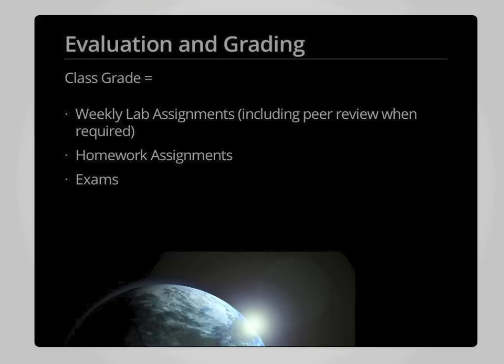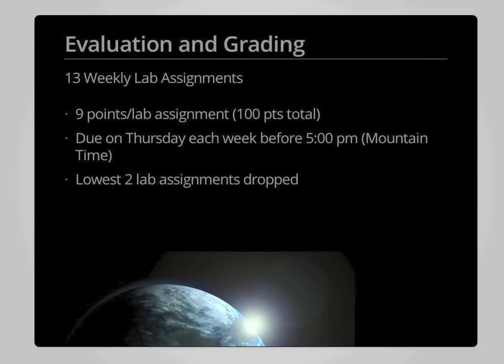The evaluation and grading for the class is a combination of scores from weekly lab assignments, homework assignments, and examinations. Over the course of the semester there will be 13 weekly lab assignments, each worth nine points. The lowest two lab assignments will be dropped, so you will have two of those 13 assignments that you can drop. Assignments will be due on the Thursday of each week by 5 p.m., and no late assignments will be accepted. An extra point will be added to the 99 points from the 11 kept scores, bringing the total lab assignment points to 100.